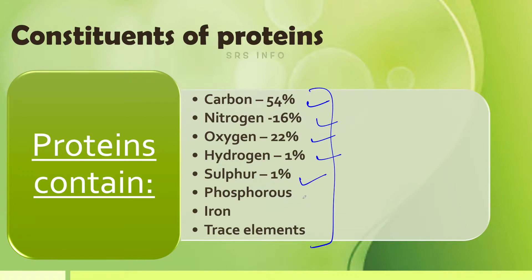In addition, proteins contain minute quantities of phosphorus, iron, and other trace elements. So the main constituents are carbon, nitrogen, oxygen, hydrogen, sulfur, phosphorus, iron, and other trace elements.